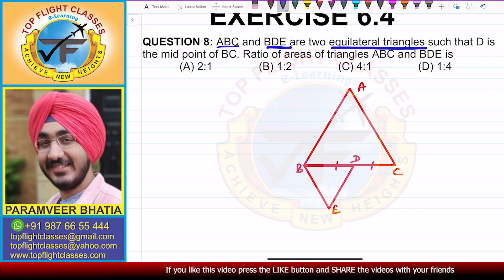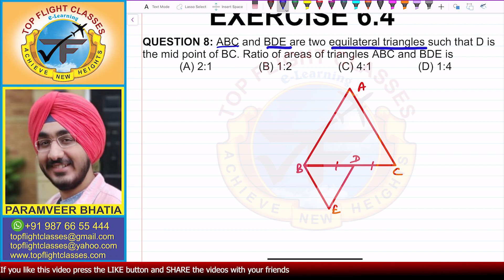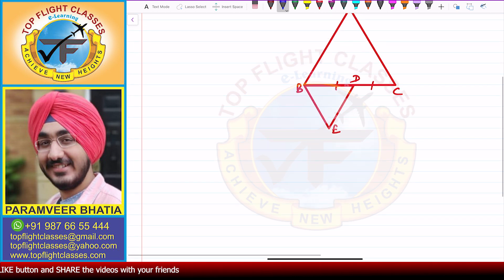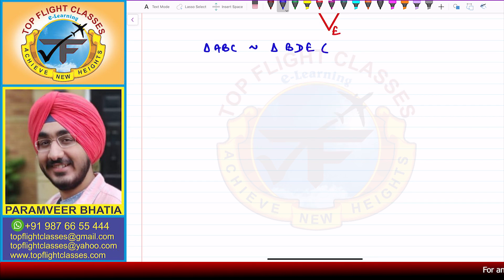If we recall the first exercise done in this chapter, we know that all equilateral triangles are similar. Therefore, triangle ABC is similar to triangle BDE, because both are equilateral triangles.